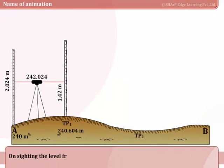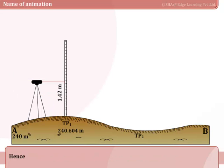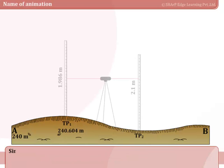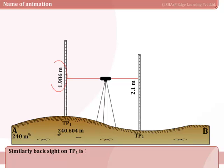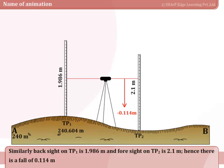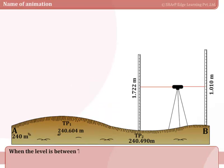On sighting the level from point A to point TP1, there is a rise of 0.604 meters. Hence, the reference level of station TP1 is 240.604 meters. Similarly, back sight on TP1 is 1.986 meters and foresight on TP2 is 2.1 meters. Hence, there is a fall of 0.104 meters and the reference level of TP2 is 240.49 meters.